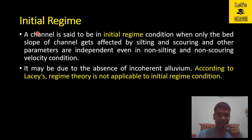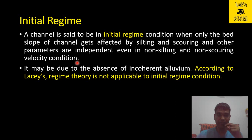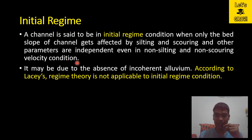A channel is said to be in initial regime condition when only the bed slope of the channel gets affected by silting and scouring, while other parameters are independent even under non-silting and non-scouring velocity conditions. A channel is in initial regime when the slope of the channel gets affected by silting and scouring. It can also happen that the channel bed gets affected even under a non-silting or non-scouring velocity condition.